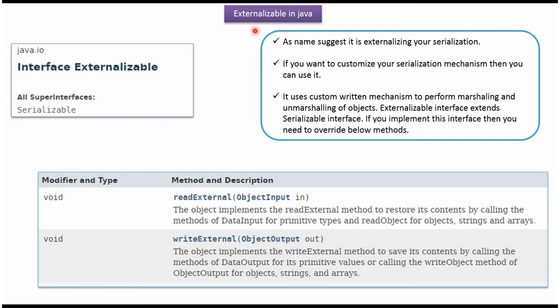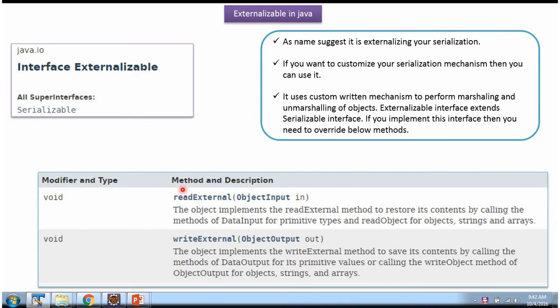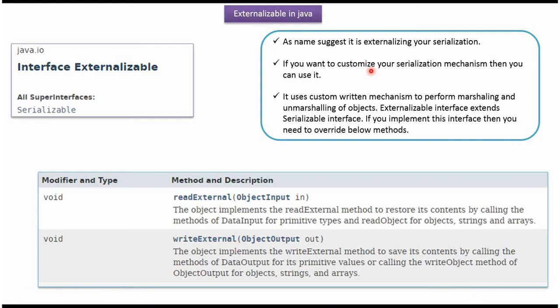In this video tutorial I will cover Externalizable in Java. The Externalizable interface belongs to the java.io package. The super interface of Externalizable is the Serializable interface. Externalizable has two methods: ReadExternal and WriteExternal. If a class implements the Externalizable interface, it has to override these two methods and provide implementation. If you want to customize your serialization mechanism, then we can use externalization.